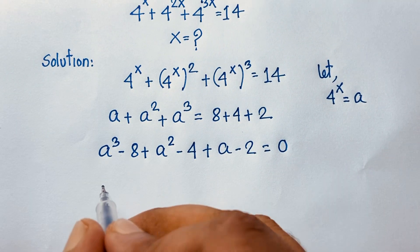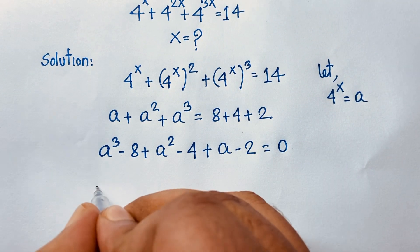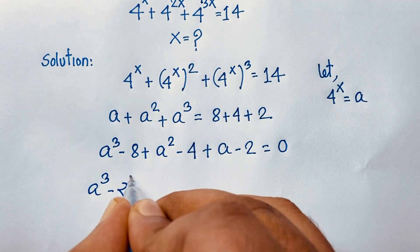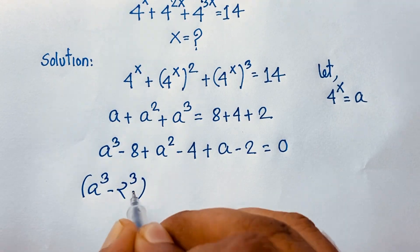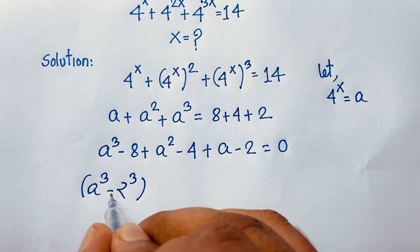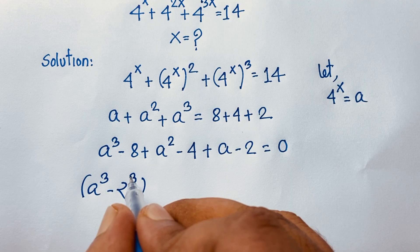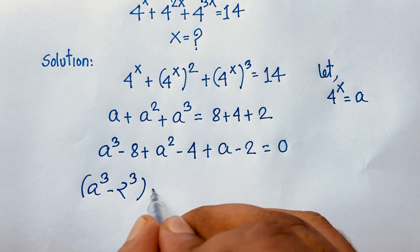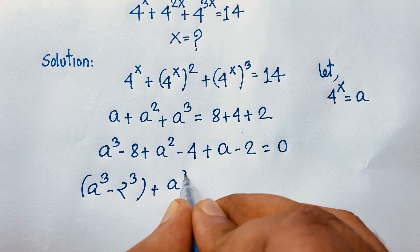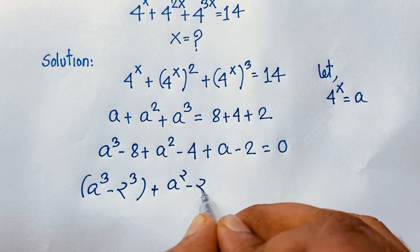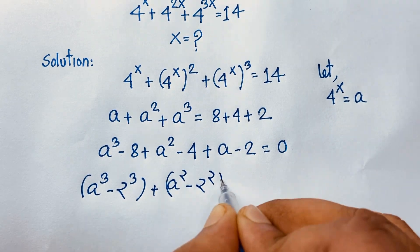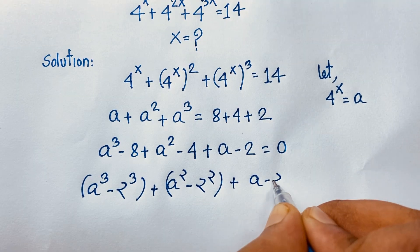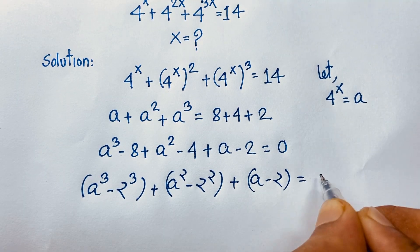Now, a cubed minus 8 is a cubed minus 2 cubed. We know the formula: a cubed minus b cubed. And a squared minus 4 is a squared minus 2 squared. So we have: (a cubed minus 2 cubed) plus (a squared minus 2 squared) plus (a minus 2) equals 0.